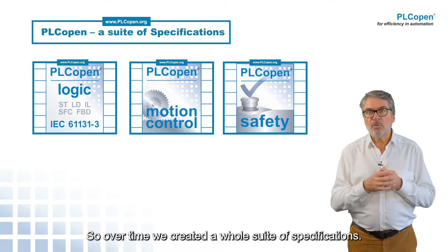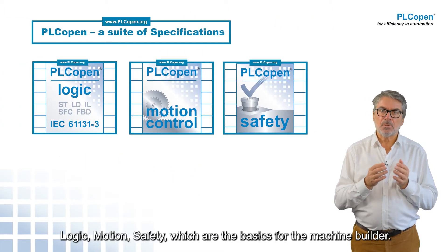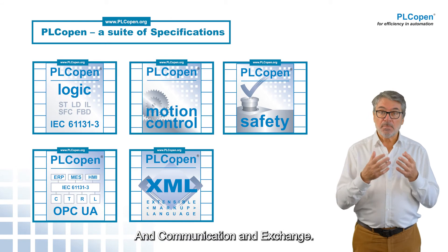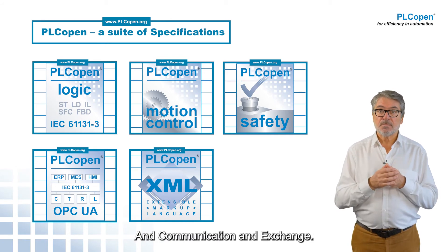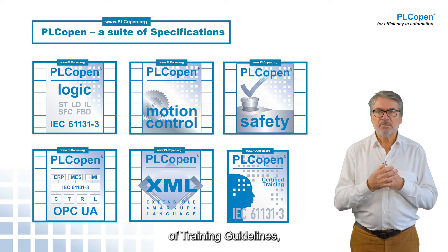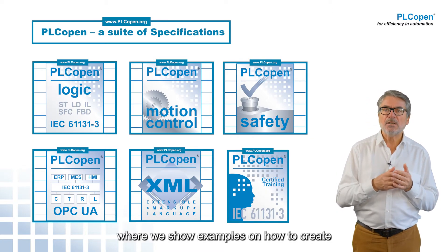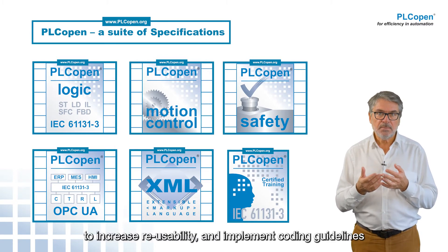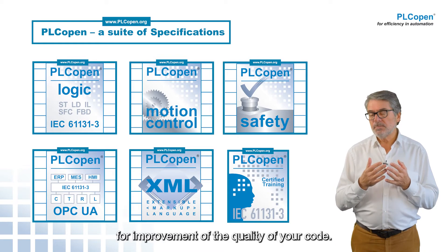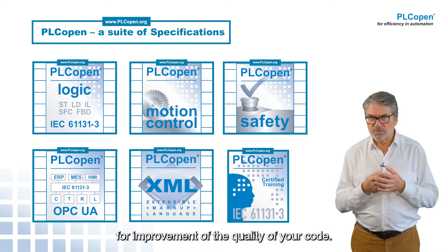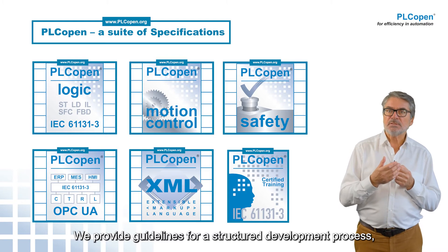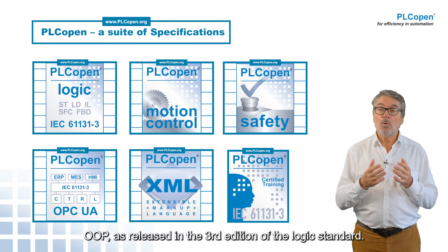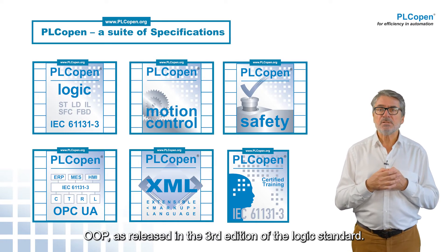So over time we created a whole suite of specifications: logic, motion, and safety, which are the basics for the machine builder, and communication and exchange. We support this with a whole set of training guidelines showing examples on how to create your own function block libraries to increase reusability, and implement coding guidelines for improvement of the quality of your code. We provide guidelines for a structured development process and on how to use the object-oriented features, OOP, as released in the third edition of the logic standard.